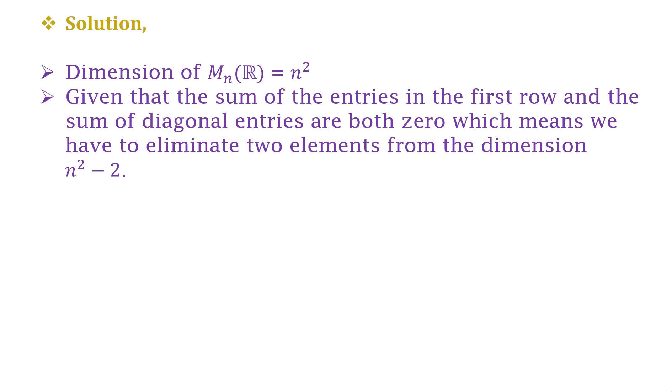Now let me give you an example to understand this more clearly. Consider the 3×3 matrix with different entries: a, b, c, d, e, f, g, h, i. Here clearly the dimension is 9.